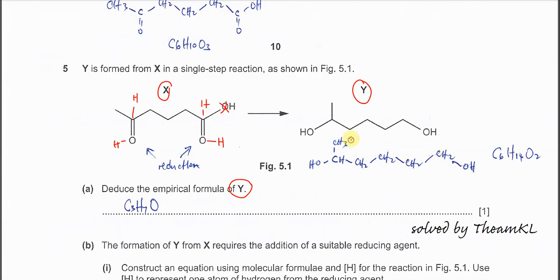Counting the hydrogens: 3 + 1 + 1 + 1 + 2 + 2 + 2 + 2 + 1 gives a total of 14 hydrogens, and oxygen is just 2. So the molecular formula is C6H14O2. Dividing by 2, you get the empirical formula which is C3H7O.